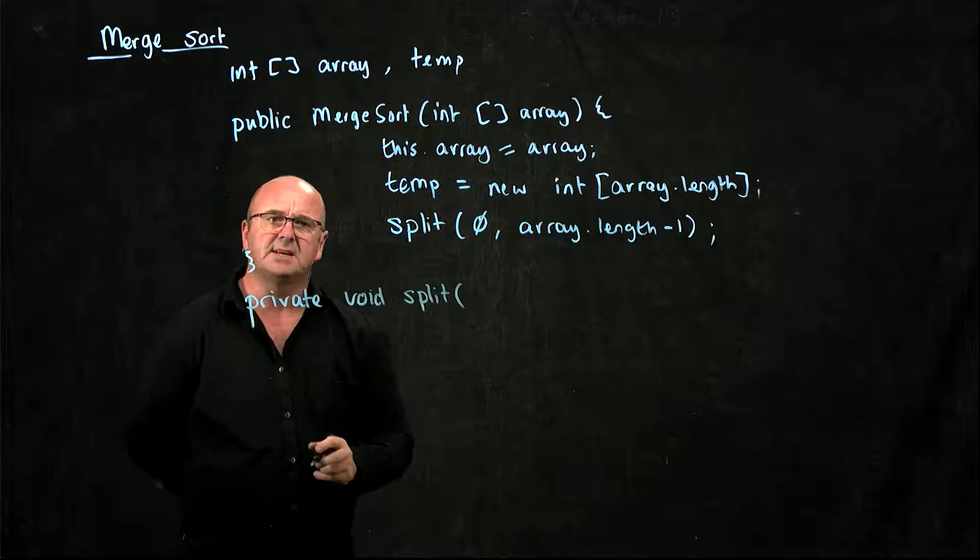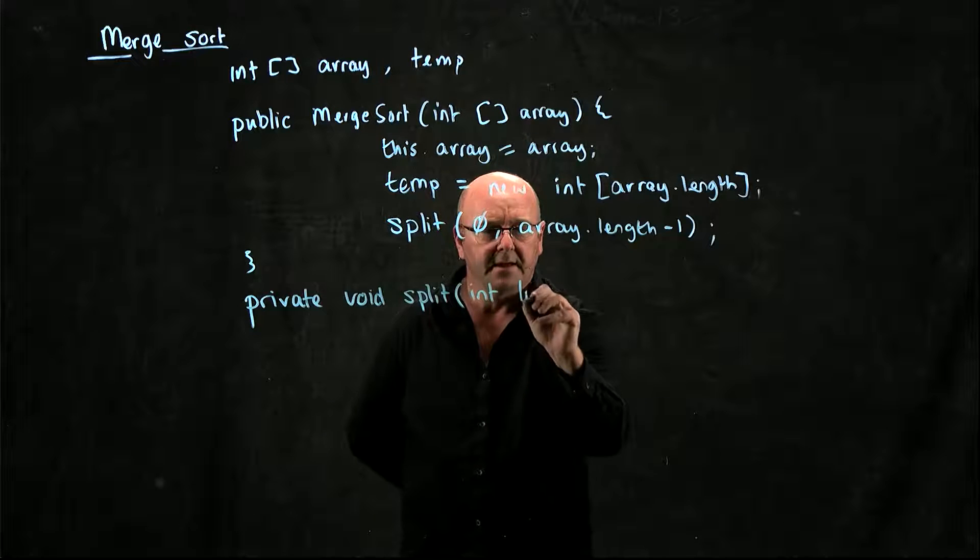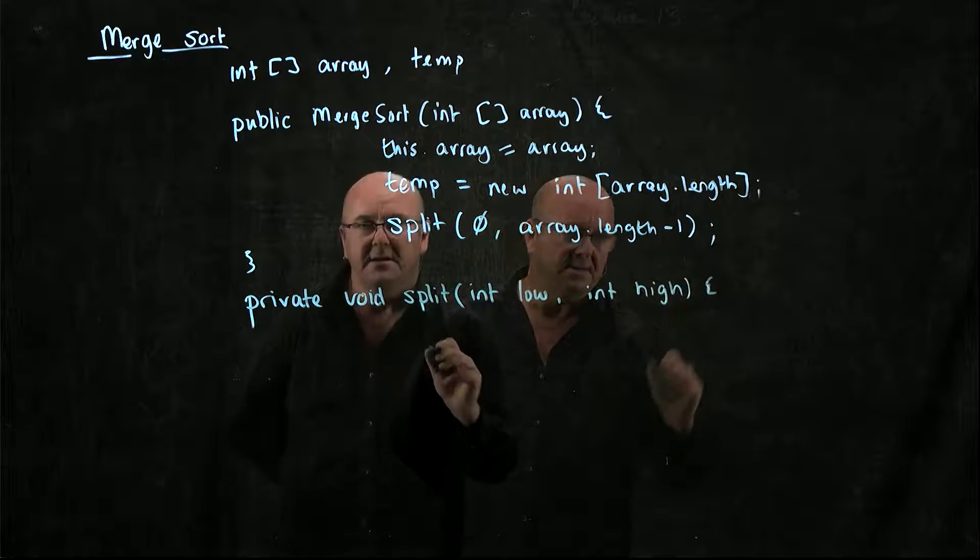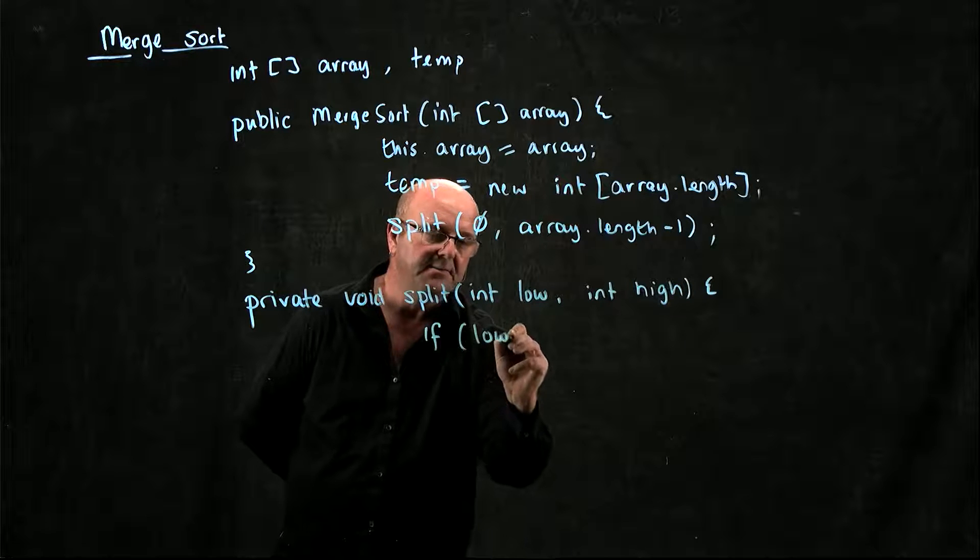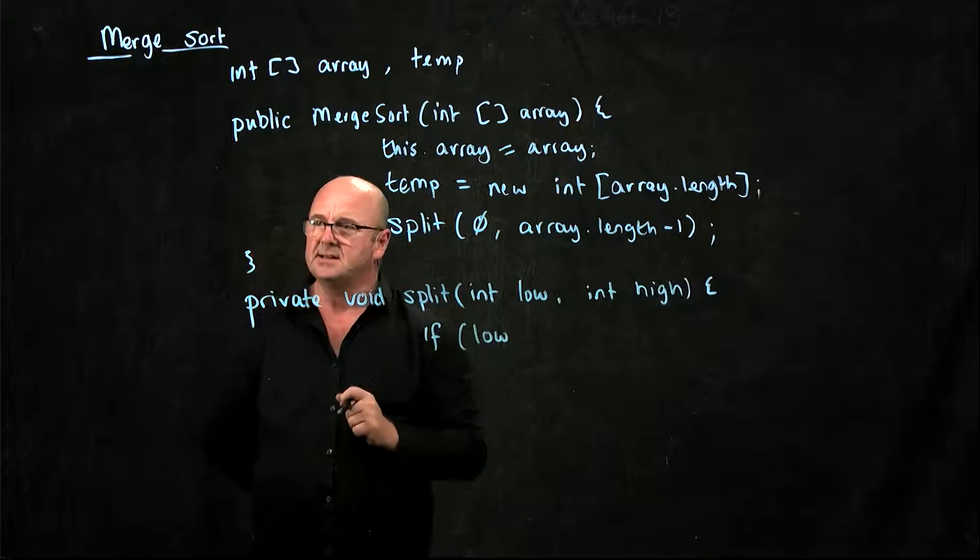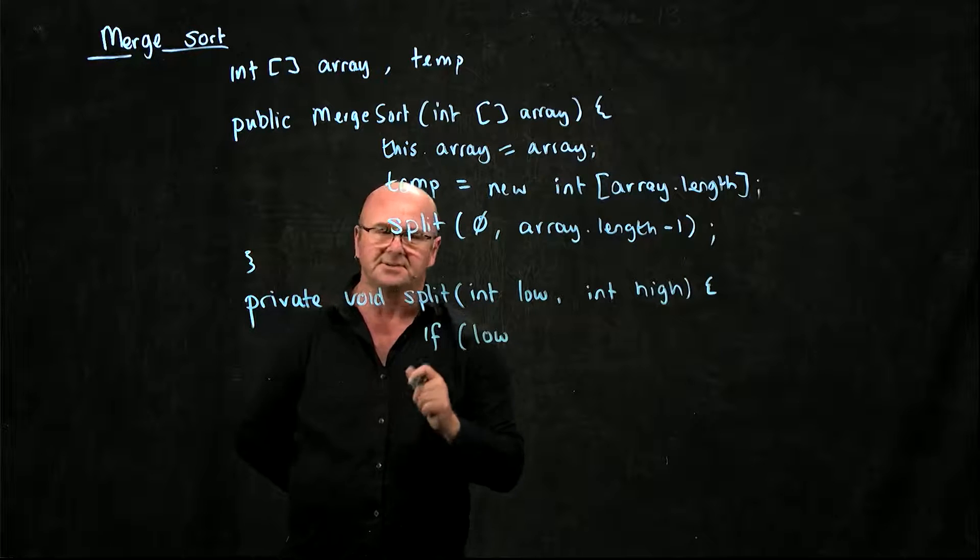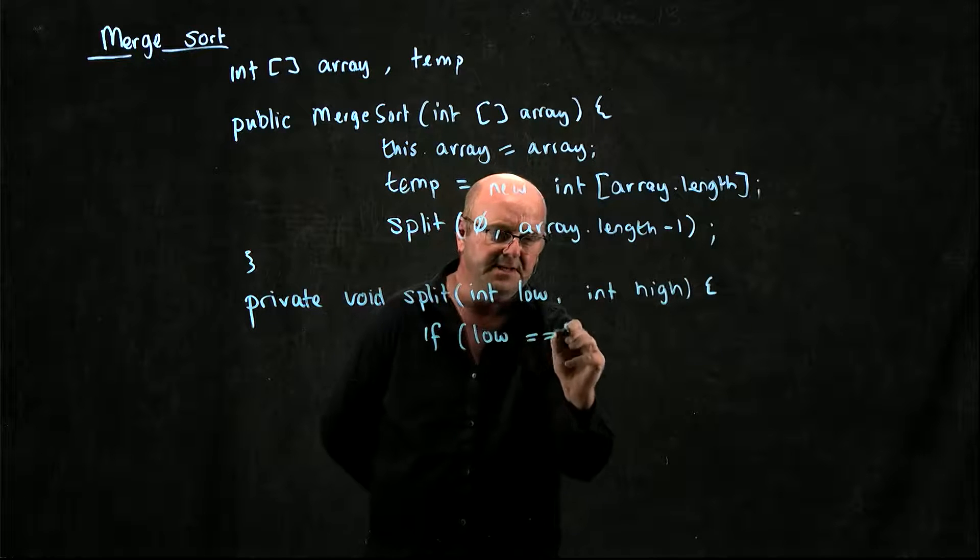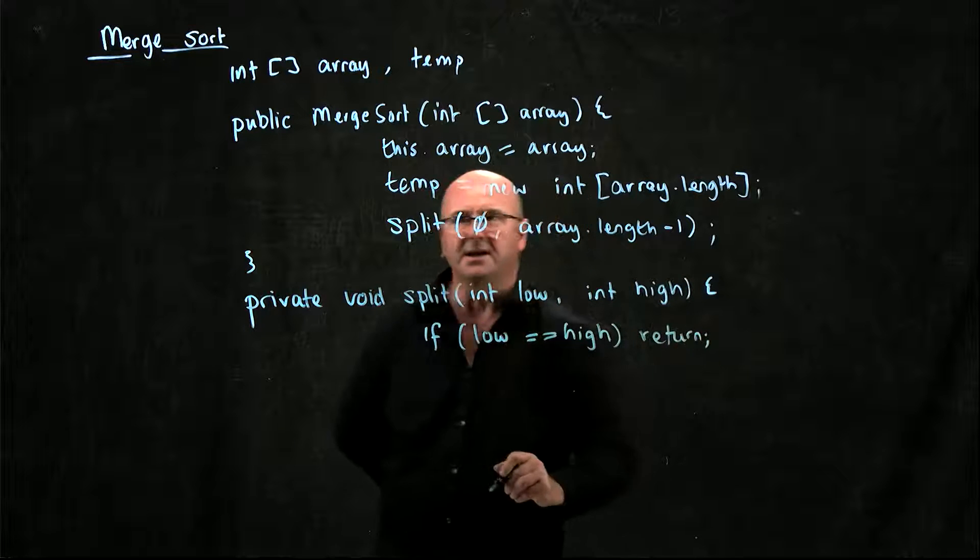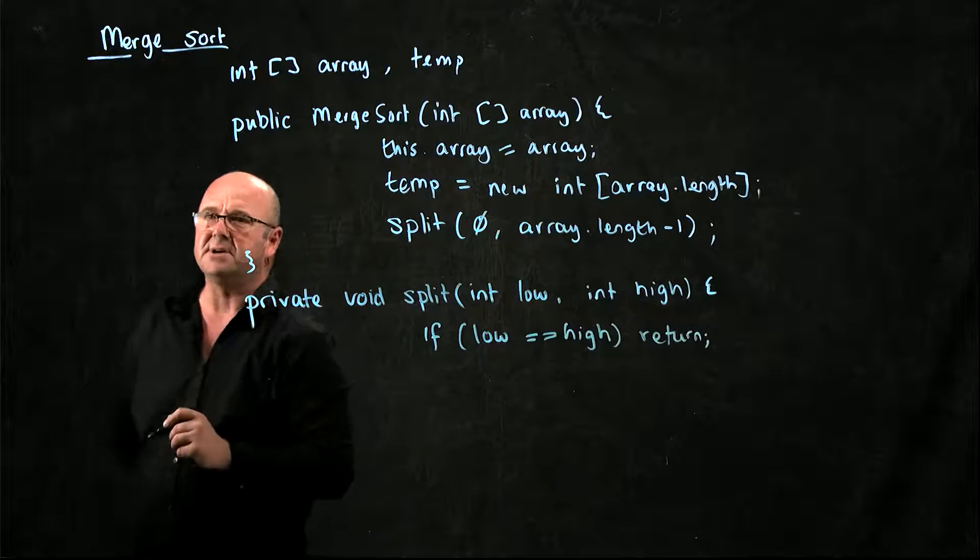And split only takes two, it takes low, and it takes high. So if we've got a single element list, our list is already sorted. So if low is equal to high, we've got a sorted list. We don't have to do anything else. We've done all the work. Perfect.